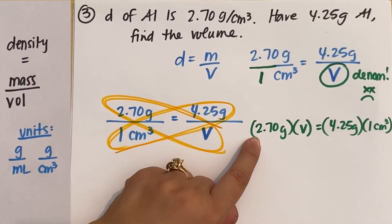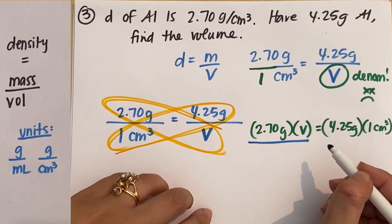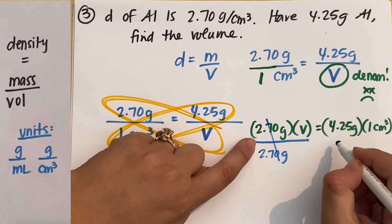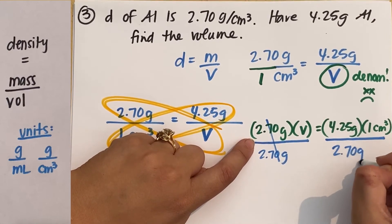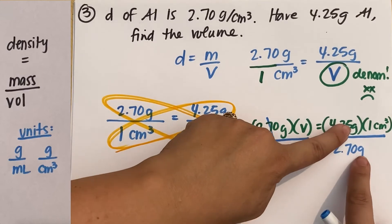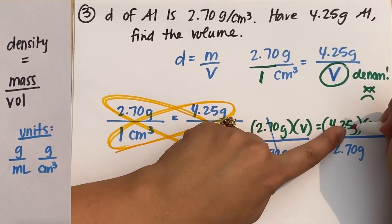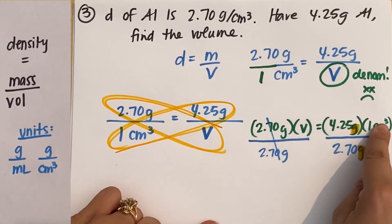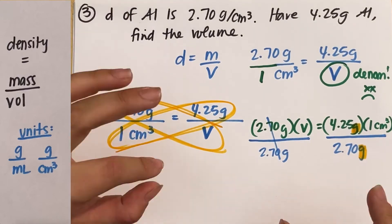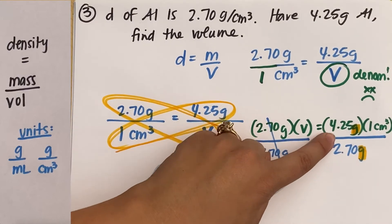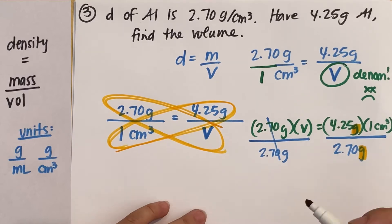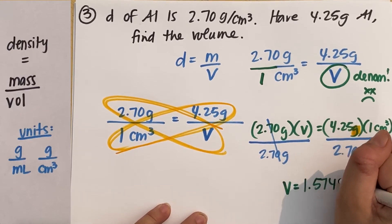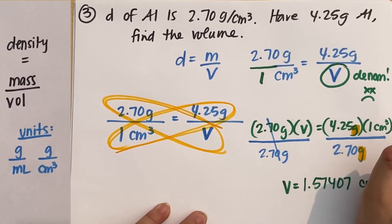These two guys multiplied by each other equals these two guys multiplied by each other. And now I just need to solve for volume. So to solve for V, I need to get rid of this 2.70. Right now it's being multiplied. So the way to get rid of it is to divide. So divide by 2.70 grams on my left, which means I'm going to divide by 2.70 grams on my right. And you'll notice grams and grams are going to cancel. So those grams will reduce out, which means my volume is going to be in a centimeter cubed unit. Hooray. Then you just beep, boop, beep in your calculator and you'll get that your volume equals 1.57407 centimeters cubed.